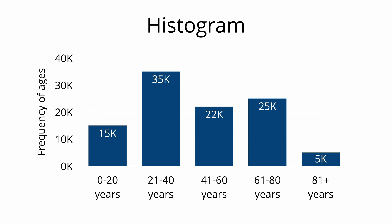We move on to the histogram. A histogram may look like a bar chart, but it is actually quite different. A histogram shows the distribution of a variable, while a bar chart compares variables. In this histogram, the x-axis represents different age groups: 0 to 20 year olds, 21 to 40 year olds, 41 to 60 year olds, and so on. The y-axis shows the frequency of these age groups. There are very few people 81 years and older, with a frequency of about 5,000, while the 21 to 40 year old group has the highest frequency at 35,000.